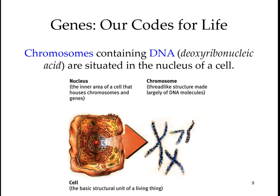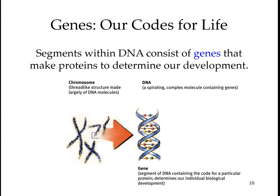Behavior geneticists study our differences and aim to determine the relative importance of heredity and environment. Environment includes every non-genetic influence, from maternal nutrition in the womb to people and things around us. Every cell nucleus contains the genetic master code for the body. Within each are 46 chromosomes, with 23 donated from each parent. Each chromosome is composed of a coiled chain of molecules called DNA. Variations at particular gene sites in the DNA define each person's uniqueness.